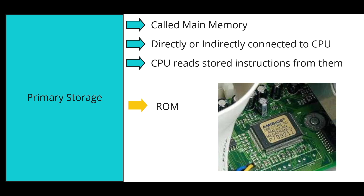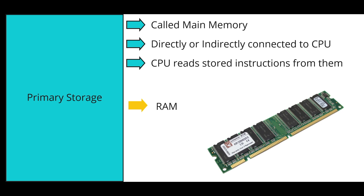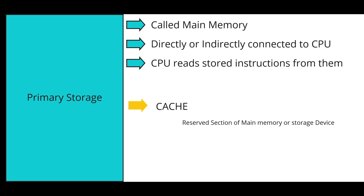The next type of primary storage is Random Access Memory, or RAM. It is called RAM because any data in RAM can be accessed just as fast as any other data. The next type is cache, which is a high-speed access area that can either be a reserved section in the main memory or any storage device.